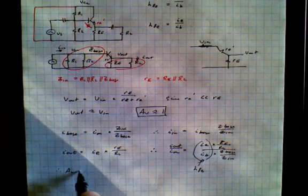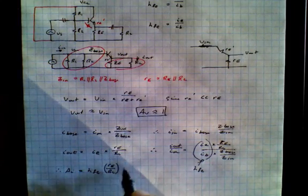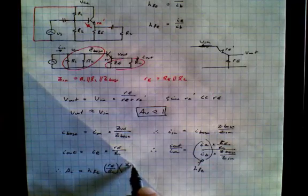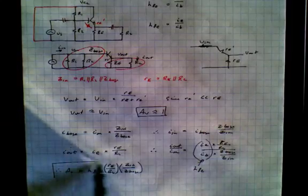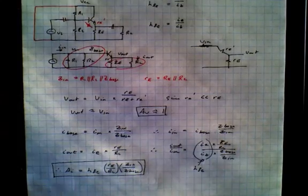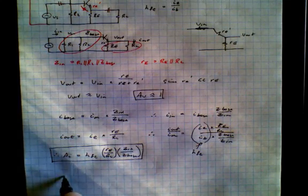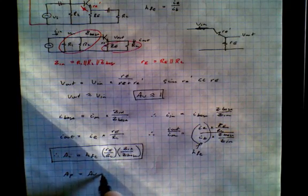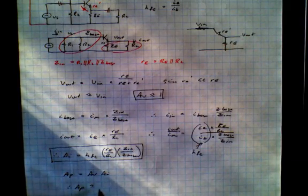HFC represents the current gain. So we can write the current gain: A_I equals HFC times RE over RL times Z_in divided by Z_base. The voltage gain is one, but the current gain can be quite high. The power gain is simply the product of the current gain and the voltage gain, and since the voltage gain equals one, the power gain is approximately equal to the current gain.